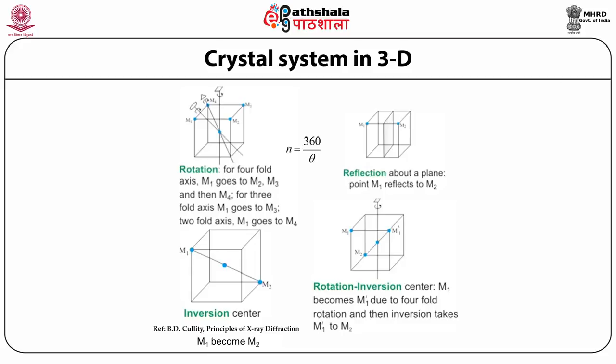This is simple rotation. Next comes the rotation-inversion center, shown on the extreme bottom right corner. In this case, M1 becomes M1' due to four-fold rotation, and then inversion takes place where M1' becomes M2.